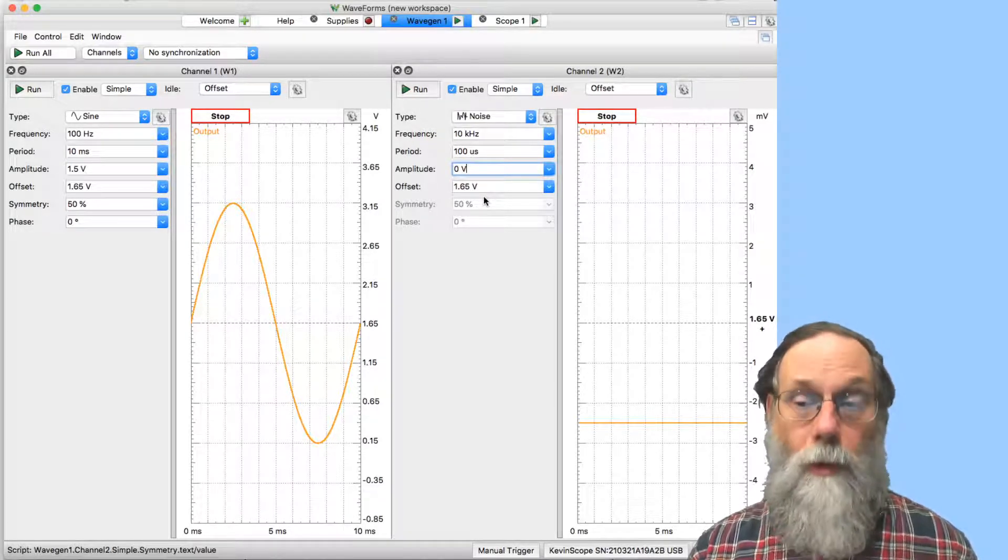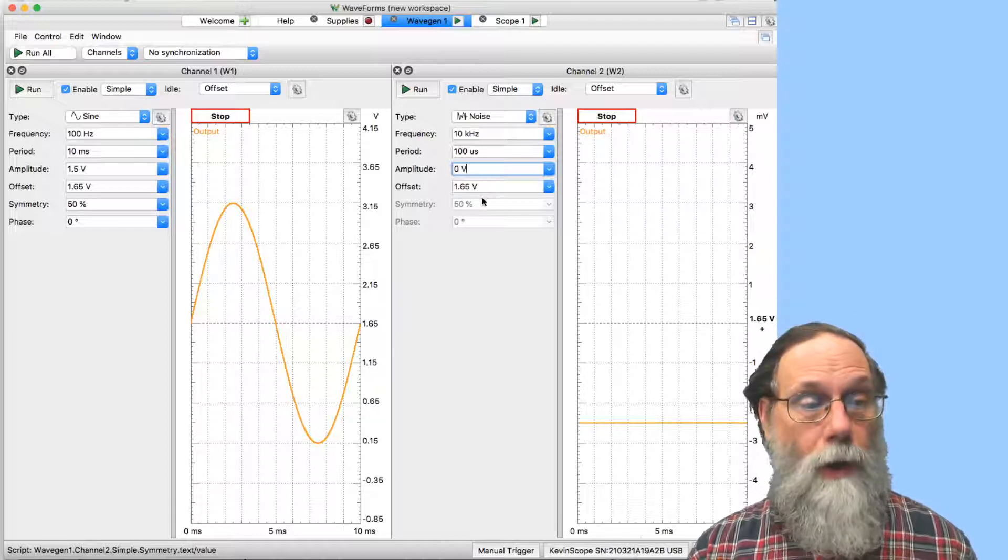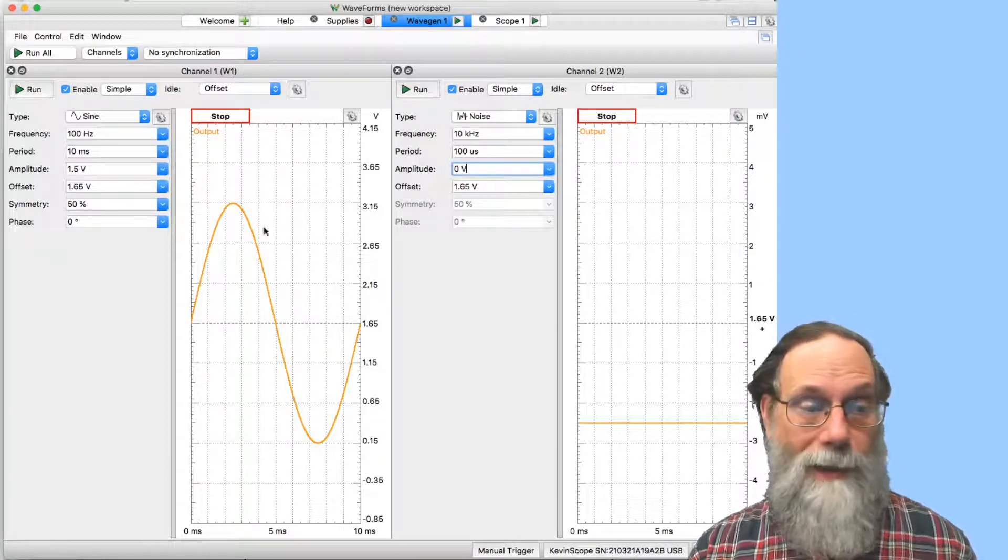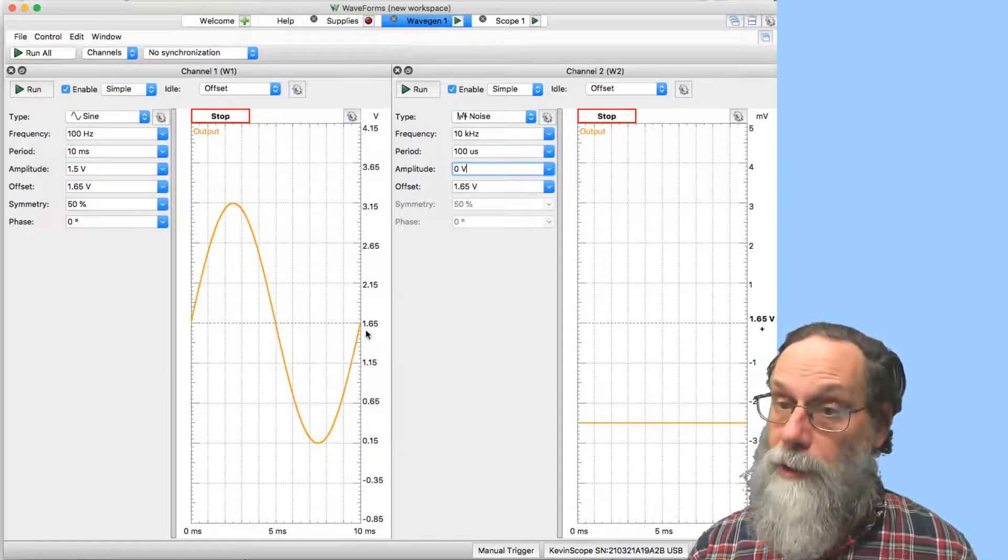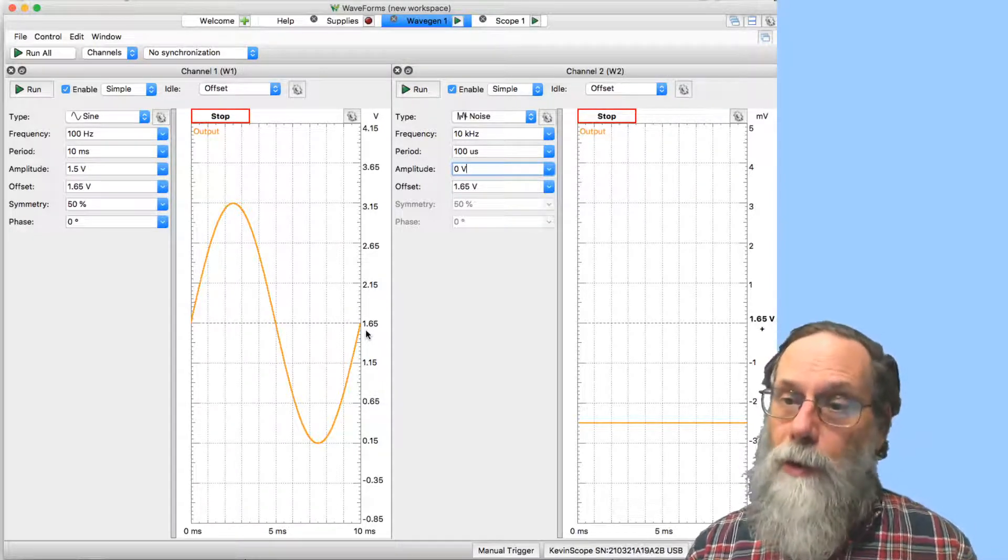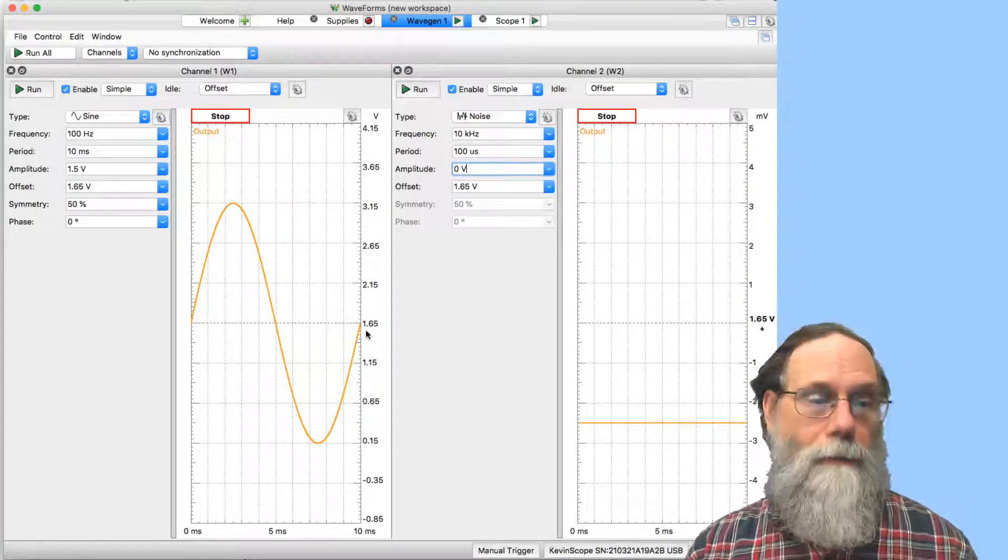What happens when I average those two things together? I'm always going to be taking this value, whatever it is, and averaging it with 1.65 volts. So it's going to be closer to 1.65 volts than what it starts on.